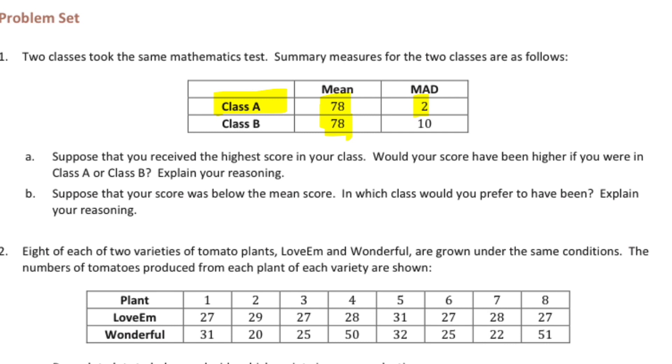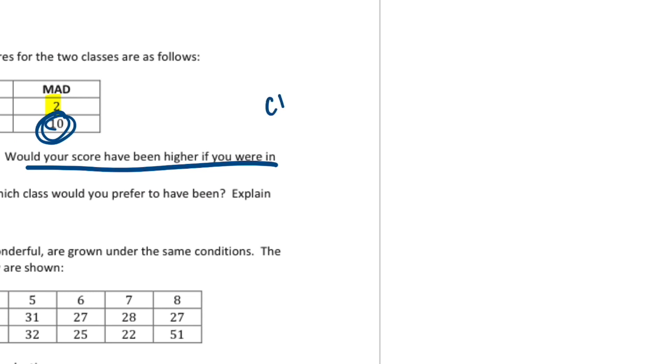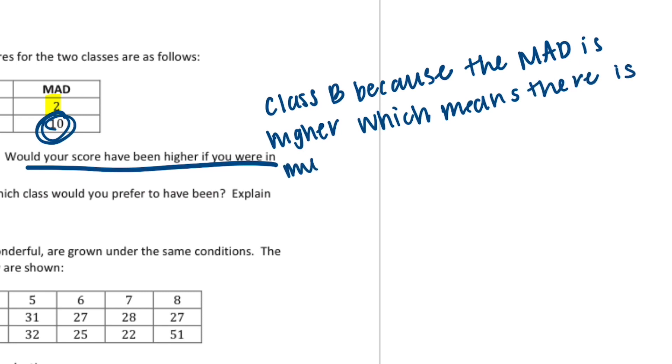Class B had a mean of 78 also, but the MAD is 10, so there's a lot of variability. So a lot of things ranging from a 68 all the way to an 88 and probably a little bit higher. So would your score have been higher if you were in Class A or B? If you received the highest score in your class, well your score would be higher if you were in Class B because the deviation is a lot greater, so the scores are going to go up a lot higher. So let's say Class B because the MAD is higher, which means there is much greater variability.